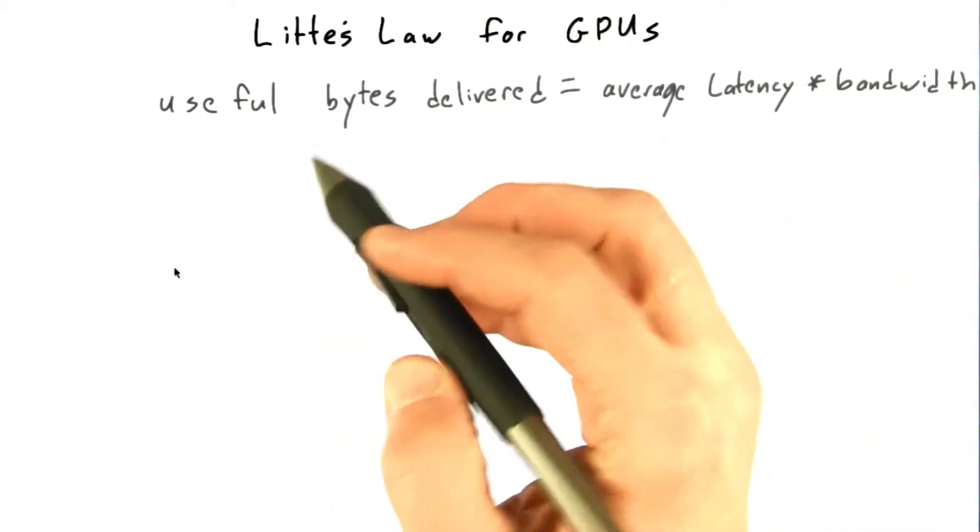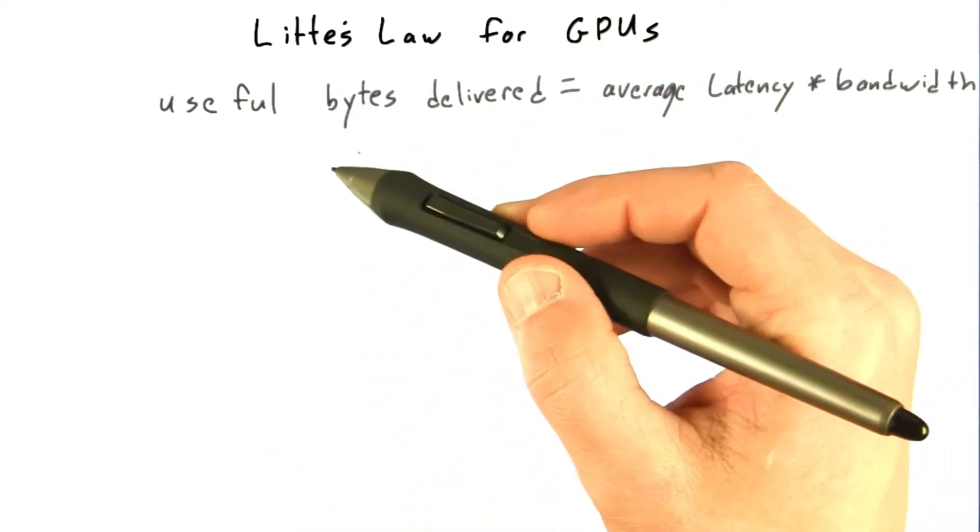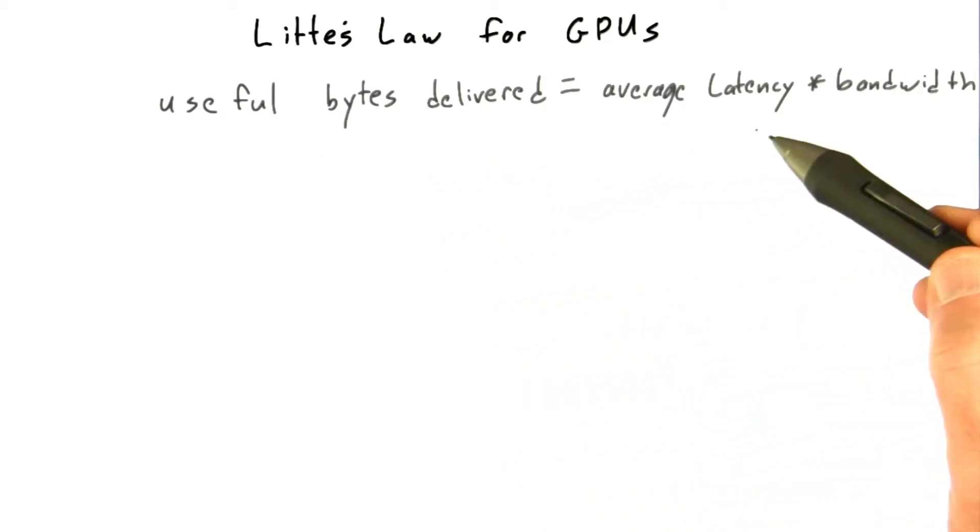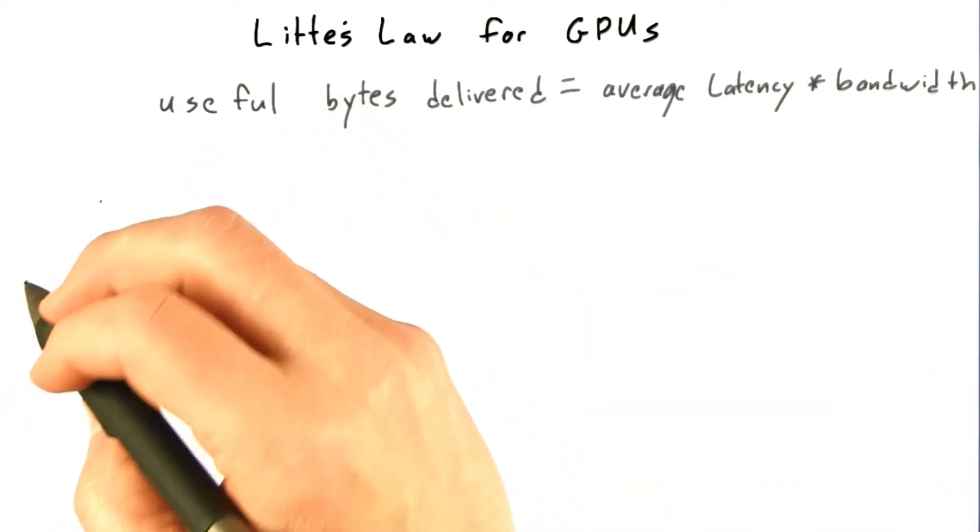So let's look at Little's Law for GPUs. To recap, Little's Law states that the number of useful bytes delivered is equal to the average latency of memory transaction times the bandwidth. Now, what are some implications of this?